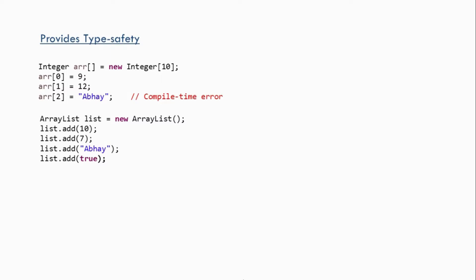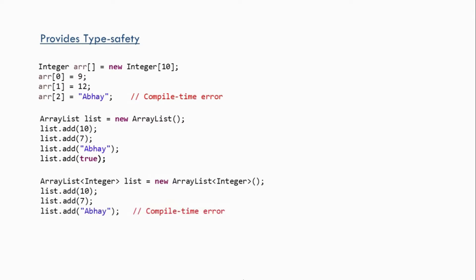This is where generics come into picture. Generics provide us type safety. For example, if you create an ArrayList of integer, it will not allow you to pass any other type of data. If you try to pass string type of data you'll get a compile time error, and similarly for boolean. So an ArrayList of integer will only accept integer type of data, which gives us type safety.